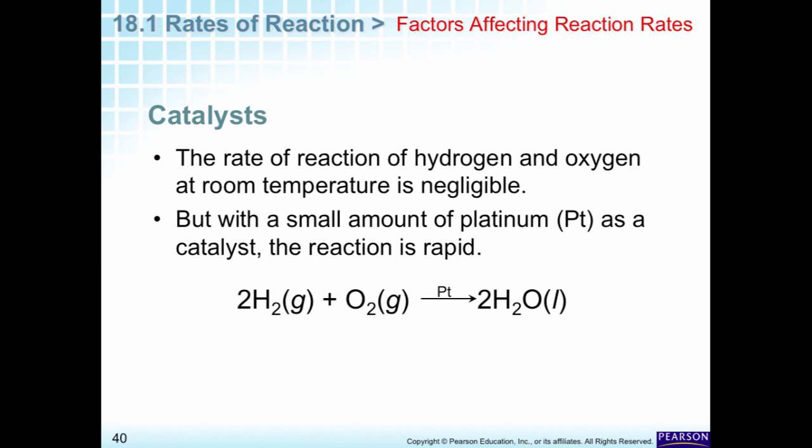Catalysts allow things that normally do not react at room temperature to be able to react at room temperature. So in this case, for hydrogen and oxygen, we are able to use platinum as a catalyst and the reaction starts occurring.